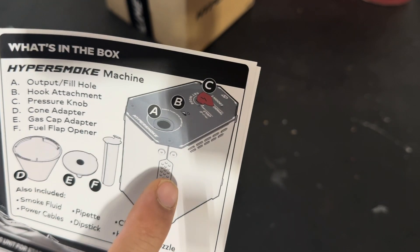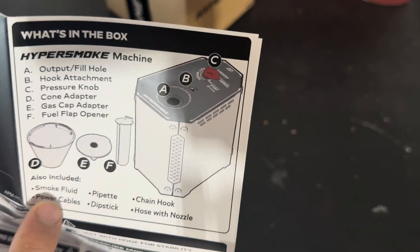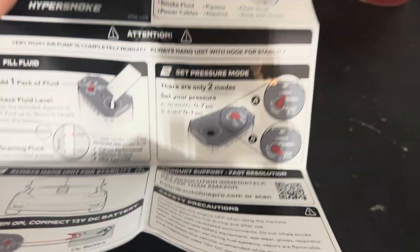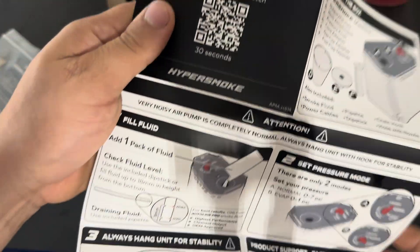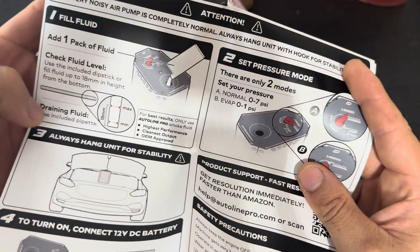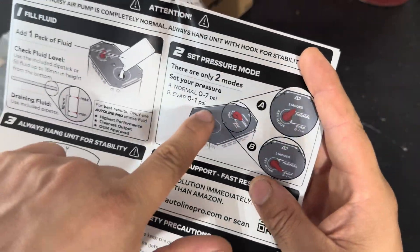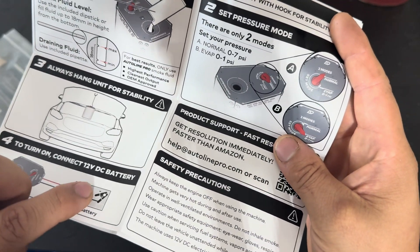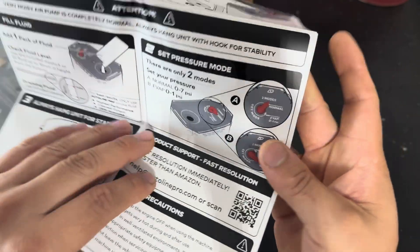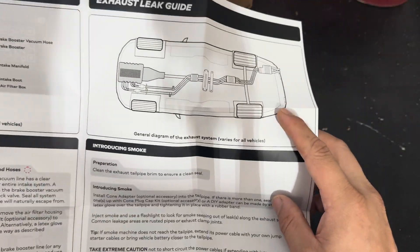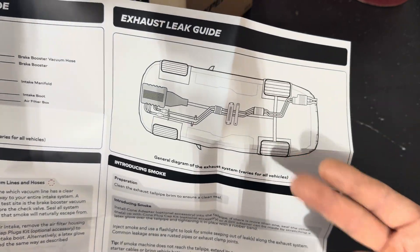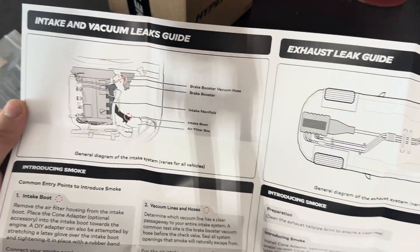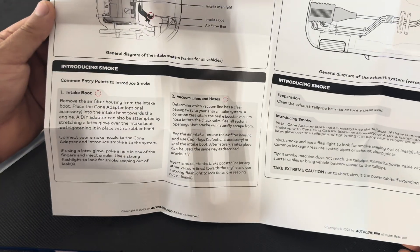Here are the steps on how to use it. You fill it with fluid, it's got a dipstick, and then you hook it up to a 12-volt source, could be a battery or something that has 12 volts. Then there's how to check for intake and vacuum leaks.